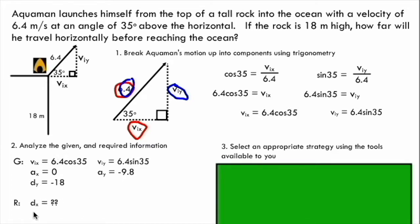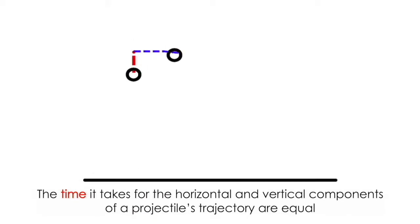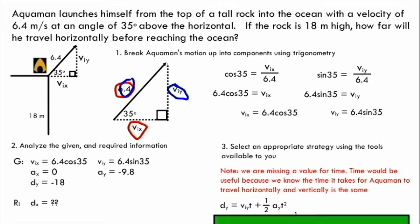So this is just an analysis of what I'm given and what I'm required to find. Okay, so at this point we haven't really done much. We've just sort of set up the problem. The next thing we need to do is select a strategy using the tools available to us. So you'll note that we're missing a value for time. This is something that we need because we know that the time it takes for our horizontal and our vertical components is going to be the same. So no matter how we swing this, we have to solve for time.